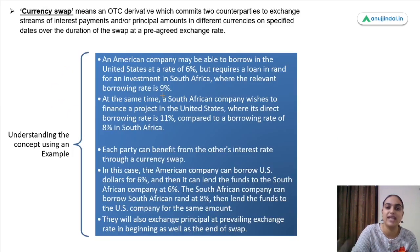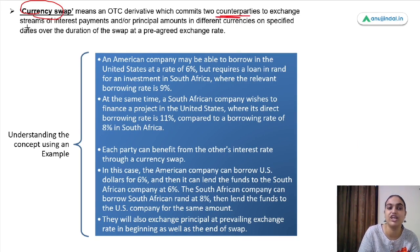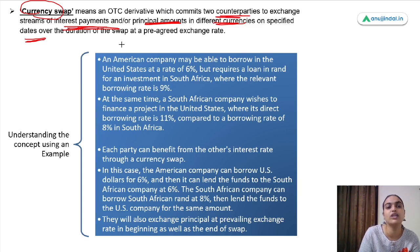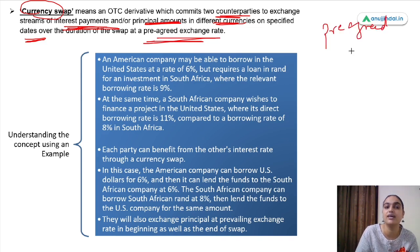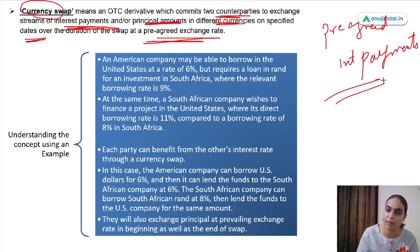Moving to the next instrument: currency swap. A currency swap is a derivative which commits two counterparties to exchange streams of interest payments, and they may also exchange the principal amounts in different currencies on a specified date over the duration of the swap at a pre-agreed exchange rate. Let's understand this with an example.